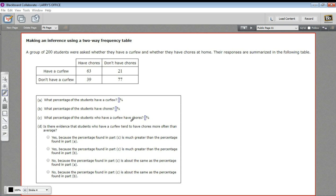In this problem, we're going to examine those results by looking at percentages, so we get an idea of what percent of students have a curfew, or have chores, or some other things. Let's take a look at this. The first one says, what percentage of students have a curfew? So the have a curfew is the 63 and the 21 together. So we need to add those together to find out how many students have a curfew.